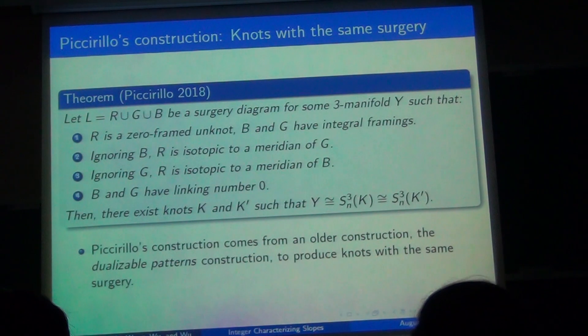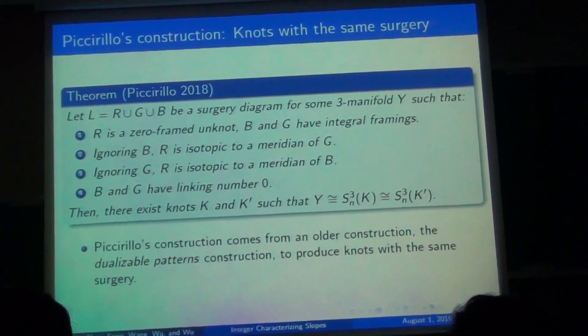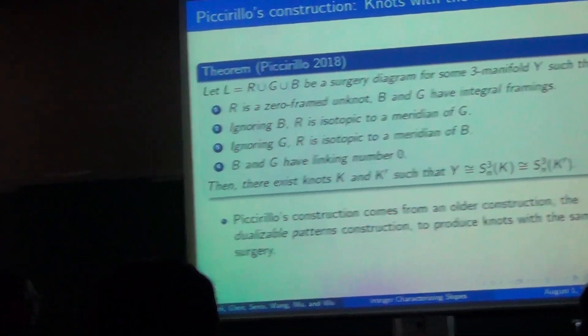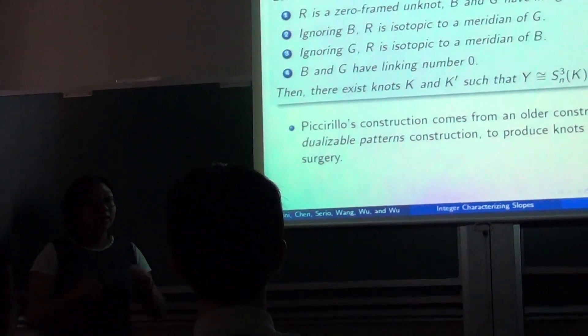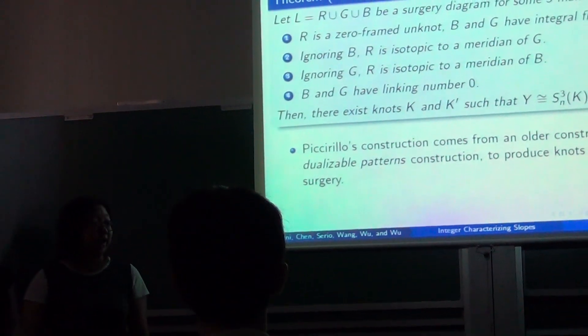Goals and results, producing knots with the same surgery. During the first part of our research, our goal was to study knots with the same surgery. We did this by using Piccirillo's construction, which was developed last year, based on the older construction of dualizable patterns.